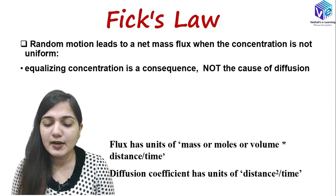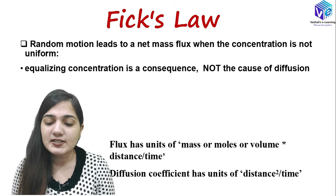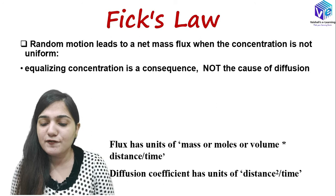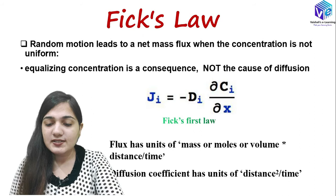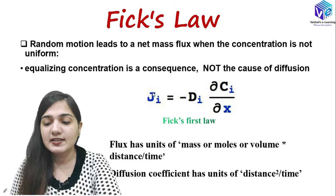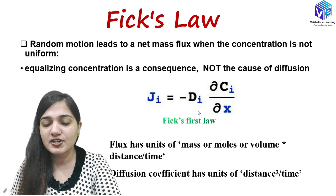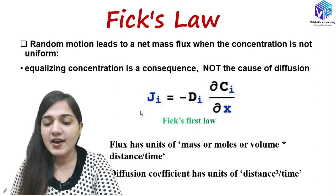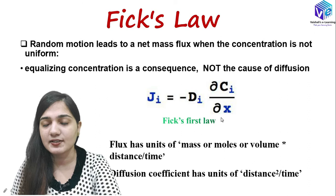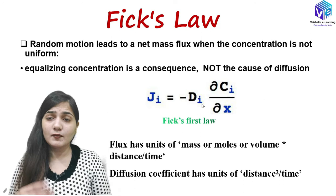We can calculate the diffusion coefficient, which has units of distance squared per unit time. Now, Fick's first law is represented by the equation: J is the flux, D is the diffusion coefficient, and J is directly proportional to the concentration gradient del-C by del-x. If I remove the proportional sign, I get J equal to negative D times del-C by del-x.